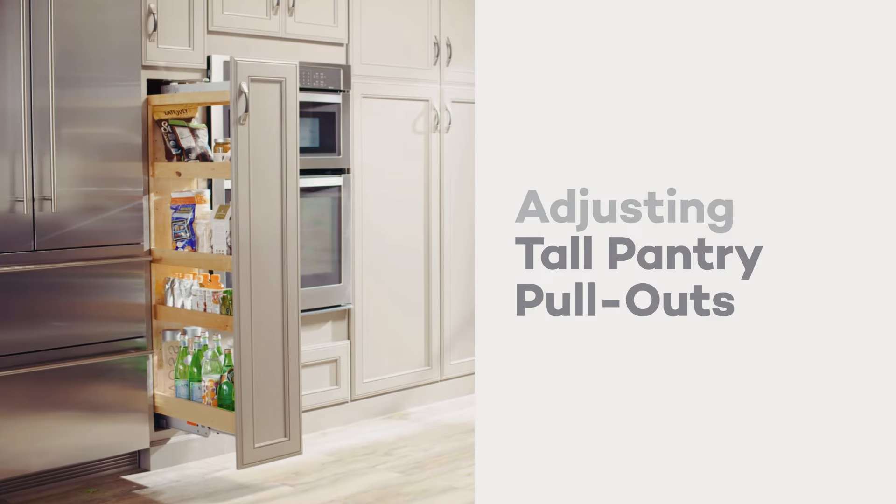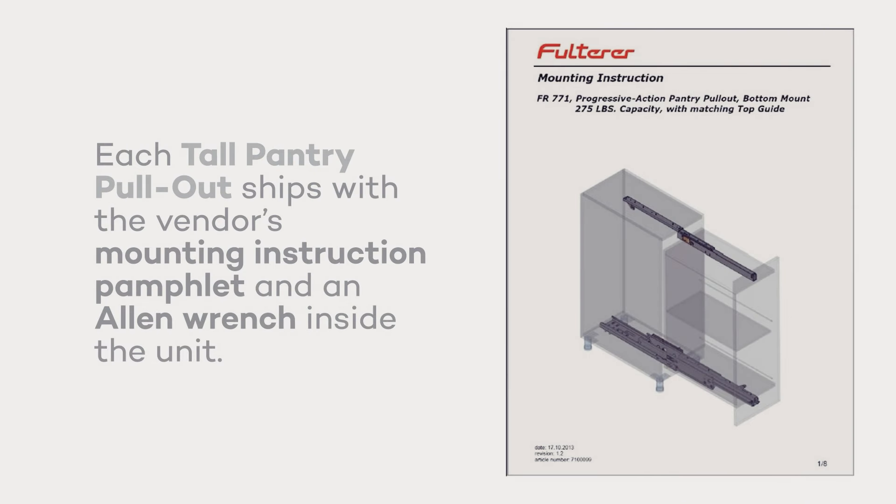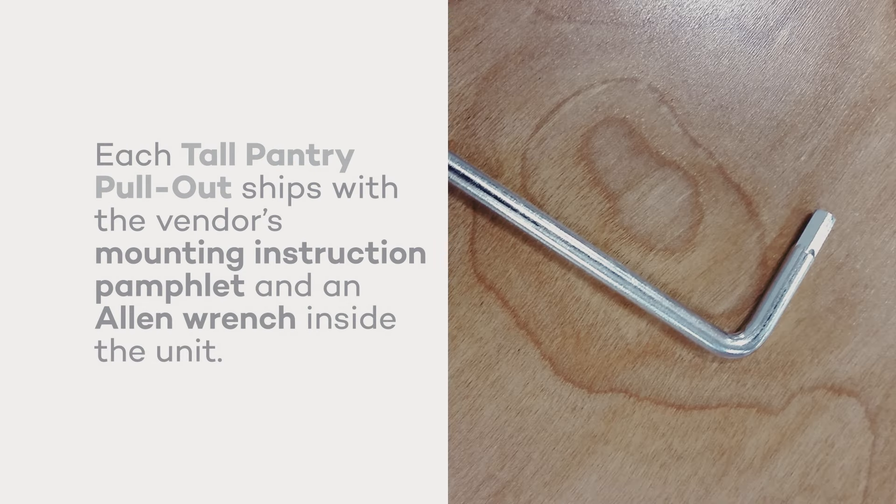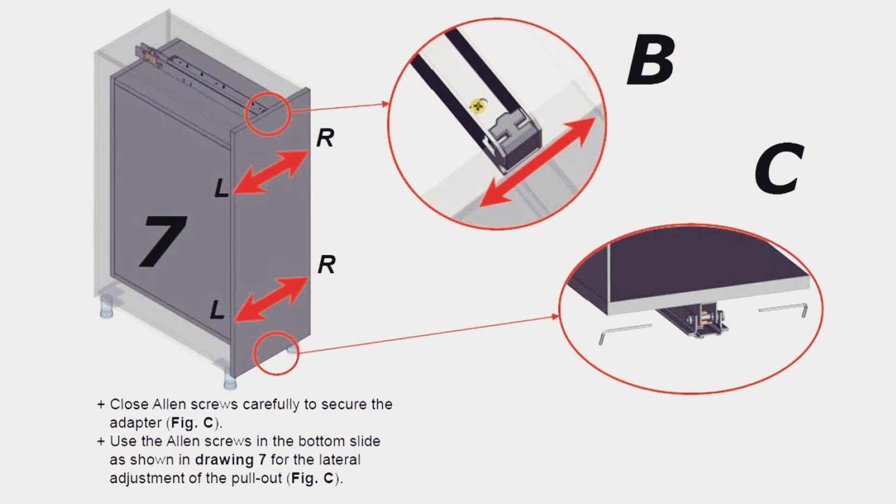Here's how you adjust a tall pantry pullout unit. Each tall pantry pullout cabinet is delivered with the vendor's mounting instruction pamphlet as well as an allen wrench inside the unit. Use this wrench and refer to these instructions to make any adjustments to the pantry pullout.